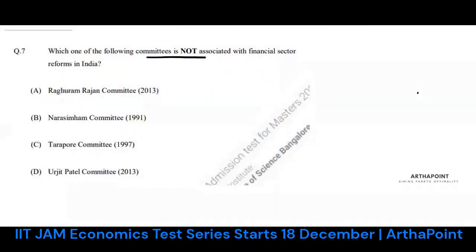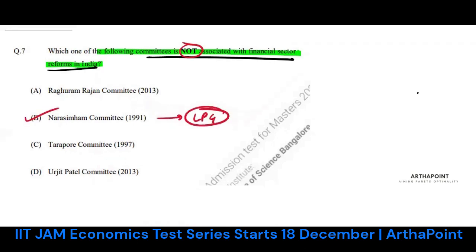This question came in IIT JAM Economics 2021 paper, related to Indian economy. It asks which of the following committees is not associated with financial sector reform. The Narasimha Committee was definitely related to the 1991 financial sector reforms, which was basically about liberalization, privatization, and globalization. So the answer is definitely not B.